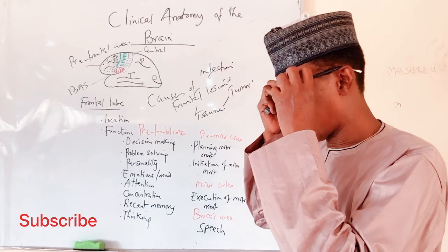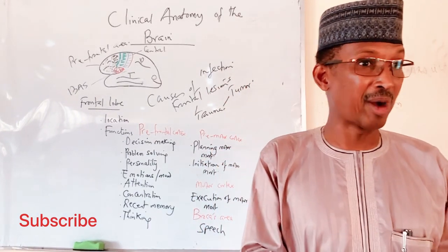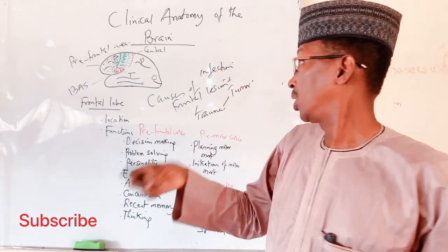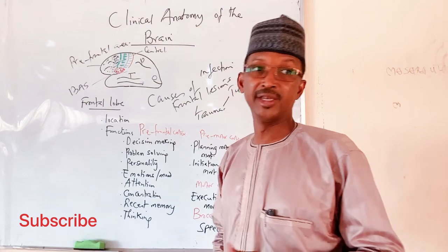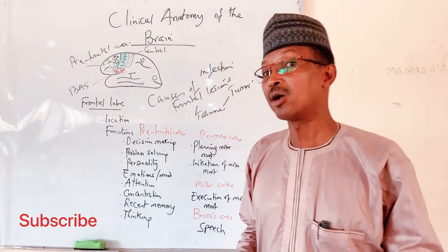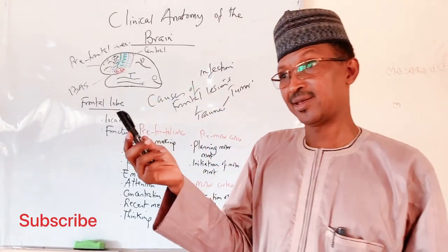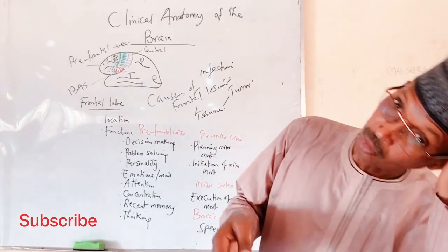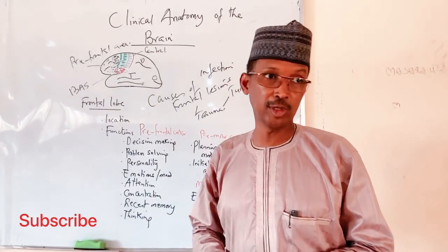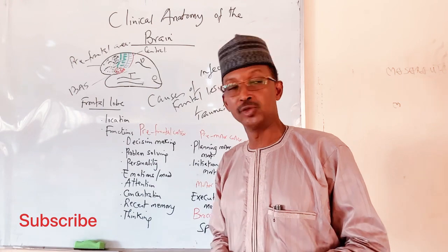Additionally, gunshots — such as during war — where a bullet enters the head can damage the frontal lobe. Knife injuries from fights are also part of traumatic causes. Falling from height and landing on the frontal part of the head can also affect the frontal lobe. These are the various causes by which someone can sustain injury to the frontal lobe.